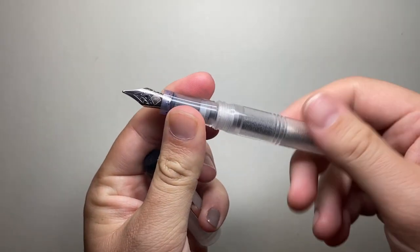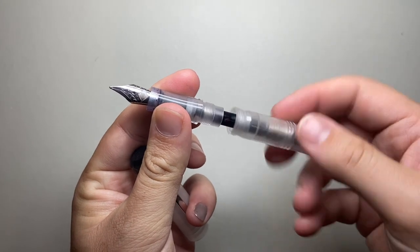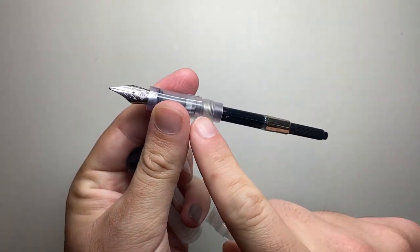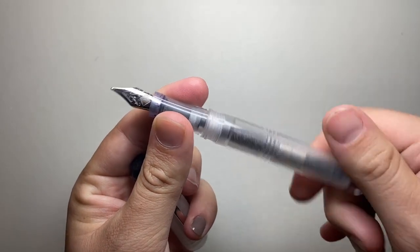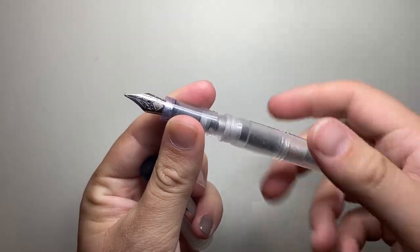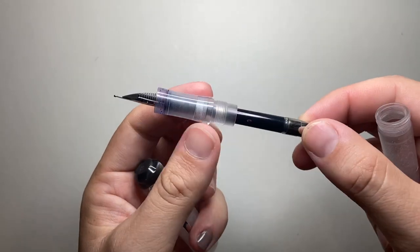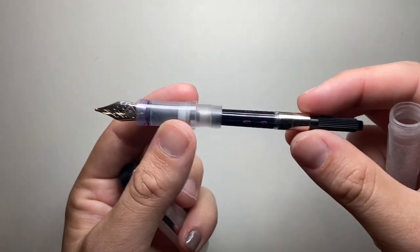The barrel unscrews, it's a cartridge converter pen or can be eyedroppered. If you put some silicone grease on these threads and a little o-ring, you can eyedropper this pen. It's got a nice number of very smooth threads there. It comes with a cartridge and with a converter, which is really nice.